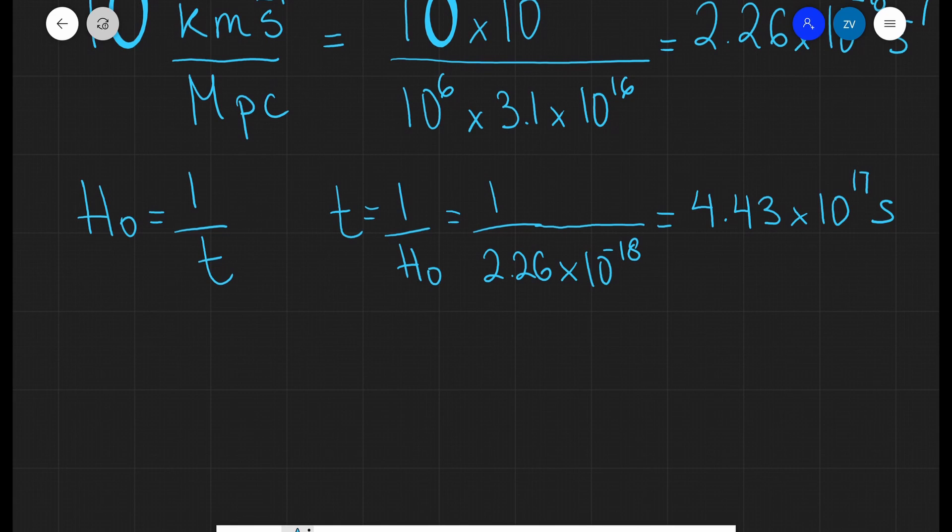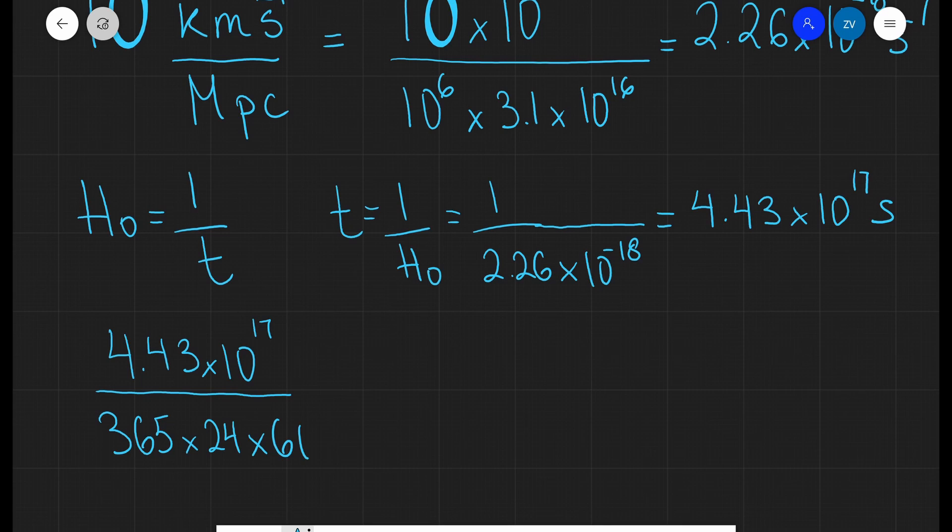Let's see if we can put that into perspective by converting it to years. So what I'm going to do is do 4.43 multiplied by 10 to the power of 17 seconds and I'm going to divide that by the number of seconds in one year. So I have 365 days, each of them has 24 hours, each of them has 60 minutes, and each of them has 60 seconds. If we do that up to two significant figures, we're going to get approximately 1.4 times 10 to the power of 10 years, which is actually equal to 14 billion years.